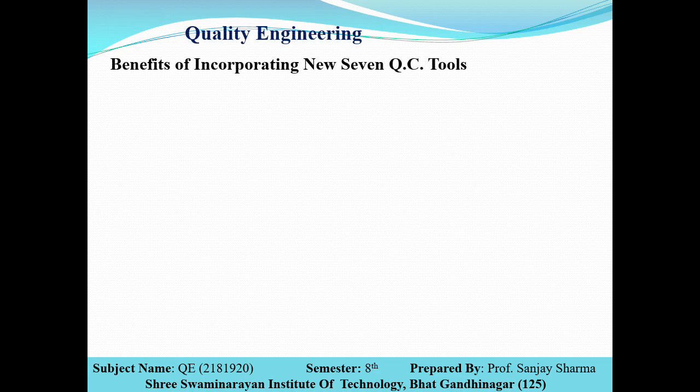What is the benefit of incorporating the new seven quality tools? Why do we need these new seven quality tools, and what benefits do we get compared to the previous seven quality control tools? With the previous seven tools, we were able to find out the percentage of sales, defect, or product. What is the additional benefit of the new seven quality tools?